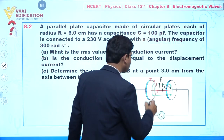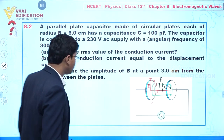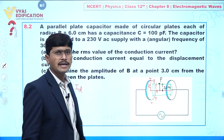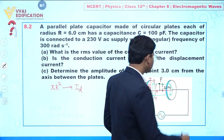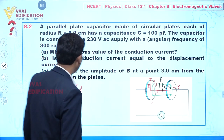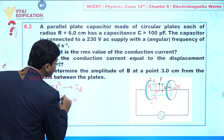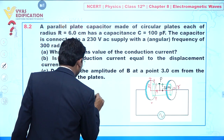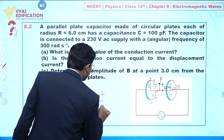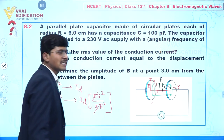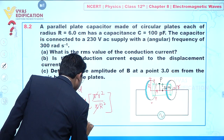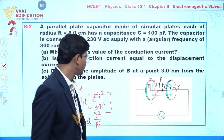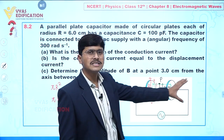Our next objective is to calculate I_enclosed. The radius of the full plate surface is capital R. When the total displacement current I_D flows through area π R², the current through the smaller Amperian loop of area π r² (where r = 3 cm) is: I_enclosed = I_D × (r²/R²), since pi cancels out.